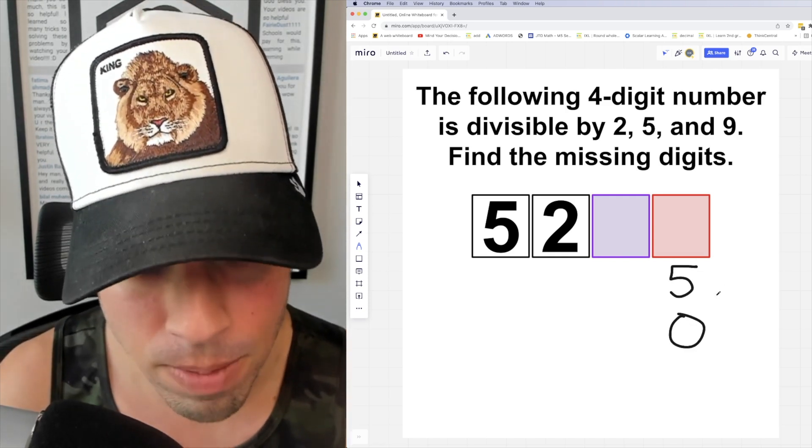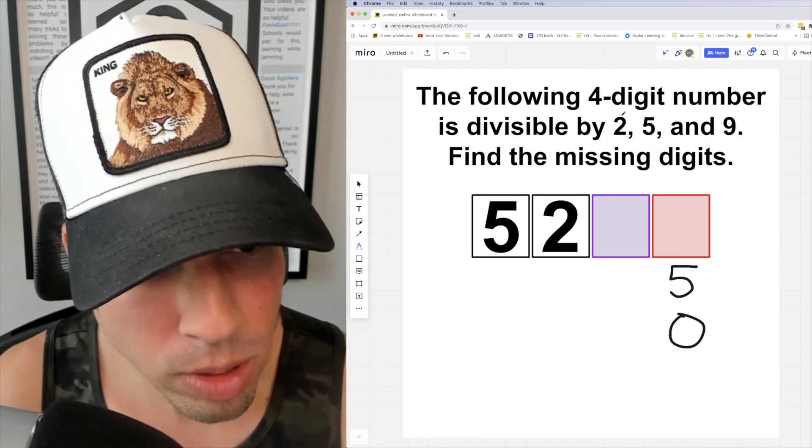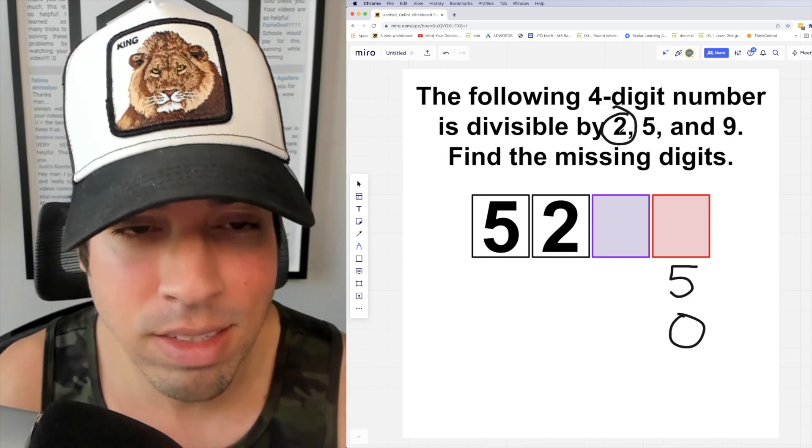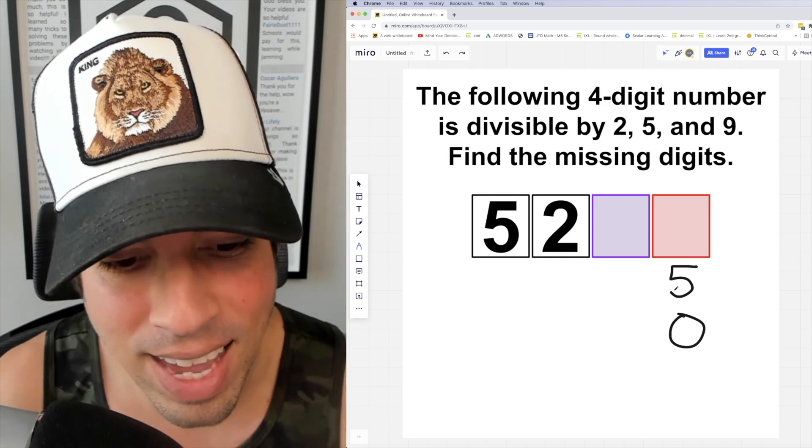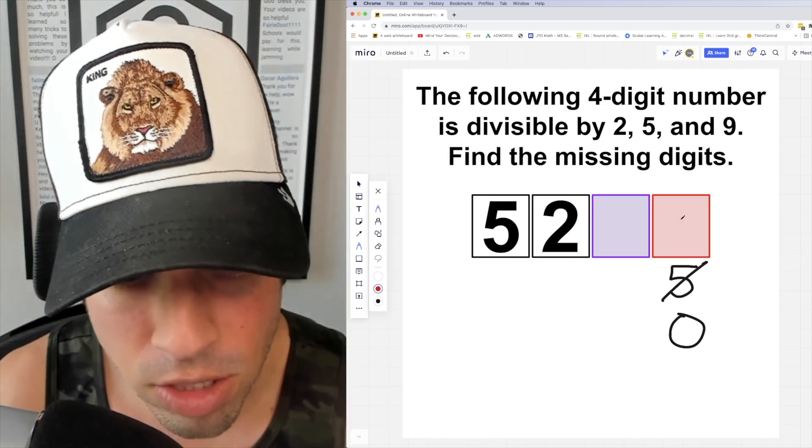Now after we know that, we're going to go to this part here that's saying it's divisible by 2. This means that this must be an even number, which means it cannot end in 5. As such, this red digit has to be 0.